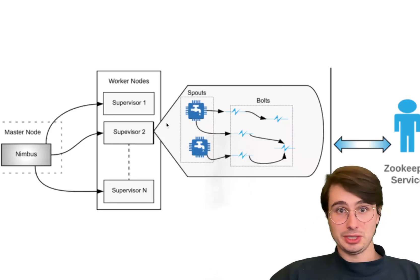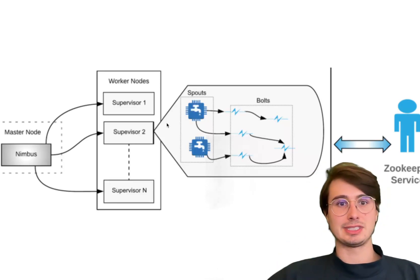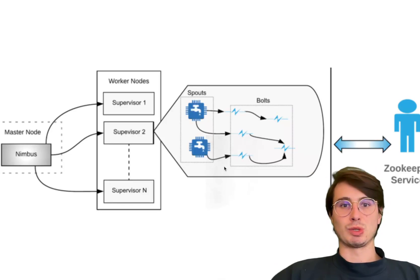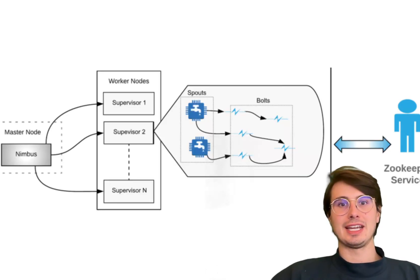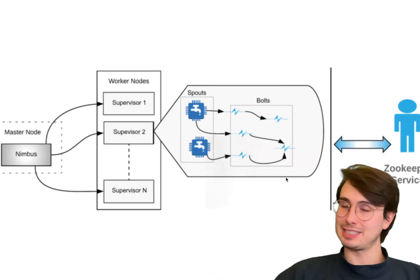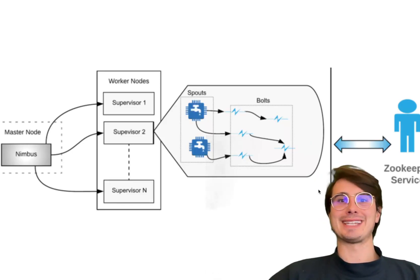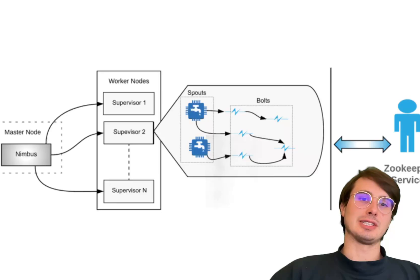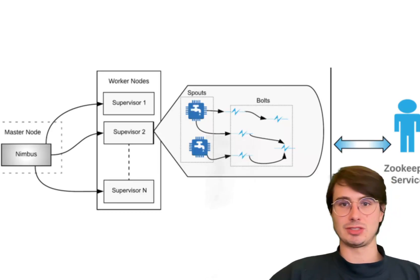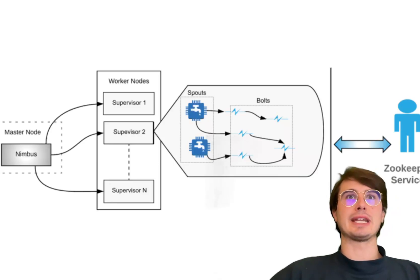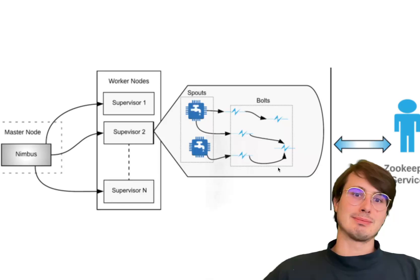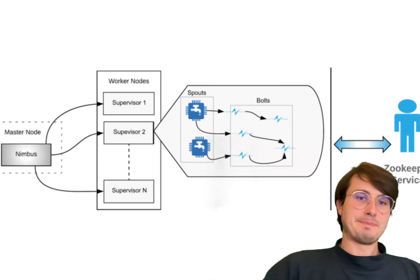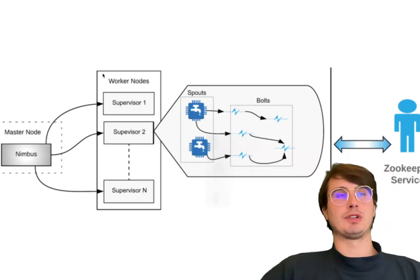Some cons: Storm by default has at-least-once processing, so it's not sufficient for applications that need stronger consistency guarantees — it doesn't guarantee that each data point will be processed only once and could process data twice. It's not designed to have tight guarantees on the consistency of data production. Storm is also lightweight in a limiting way — it has much less advanced features for handling batch data or integrating machine learning models, making it much less suitable for applications beyond basic streaming.